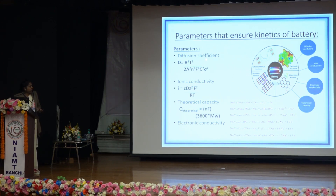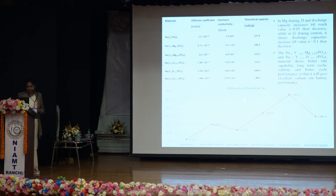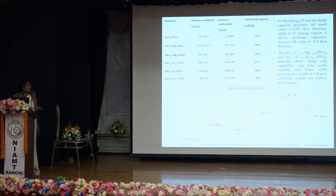The parameters that ensure the kinetics of a battery are the diffusion coefficient, ionic conductivity, theoretical capacity, and electronic conductivity — the intrinsic electronic conductivity of the electrode material. The main electrode material studied is sodium vanadium phosphate (Na₃V₂(PO₄)₃), which is practically available and in use in some applications. However, it also has an energy density issue. Doping with magnesium and zirconium was carried out in various experiments.